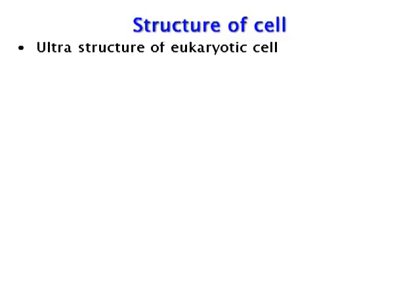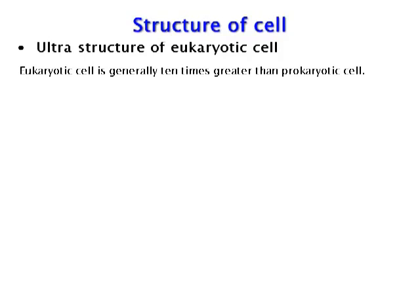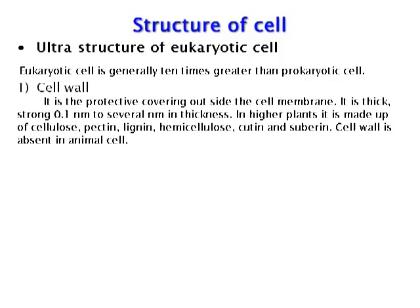Ultrastructure of eukaryotic cell: The eukaryotic cell is generally 10 times greater than the prokaryotic cell. Cell wall is the protective covering outside the cell membrane; it is thick and strong, ranging from 0.1 nanometer to several nanometers in thickness. In higher plants it is made up of cellulose, pectin, lignin, hemicellulose, cutin, and suberin. Cell wall is absent in animal cells.